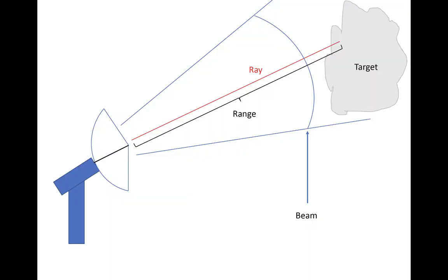Some other terms listed previously were beam, ray, target, and echo. The beam refers to the conical area emanating from the radar that expands as it moves farther from the radar. The ray, or the red line, refers to the path along the center of the main beam. The target is any reflecting object that backscatters radiation toward the radar dish, and the backscattered radiation received back at the radar is what we call the echo.